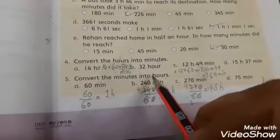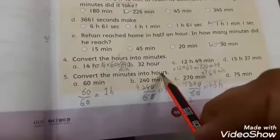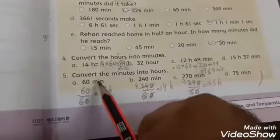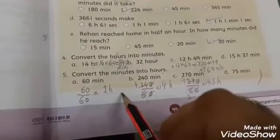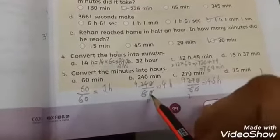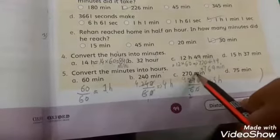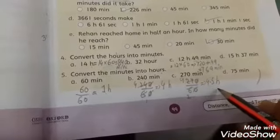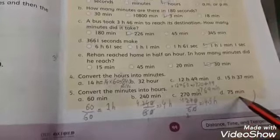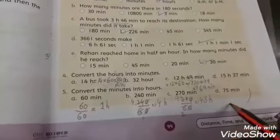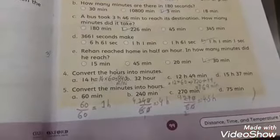Question number 5: convert the minutes into hours. To convert minutes to hours, divide by 60. 60 minutes divided by 60 is 1 hour. 240 divided by 60 is 4 hours. 270 divided by 60 is 4.5 hours. And 75 minutes, divide by 60 to get the answer.